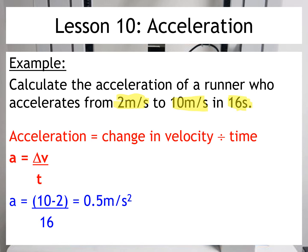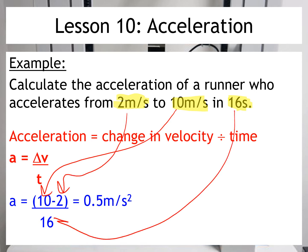We're then going to put those numbers into the equation below. So what we've got is acceleration equals change in velocity divided by time. So we've got the final velocity here, the initial velocity here, and then the time taken. And when we calculate that, we come up with the answer 0.5 metres per second squared.